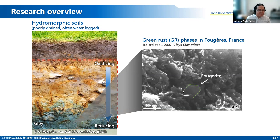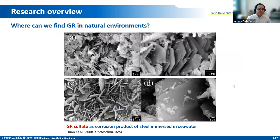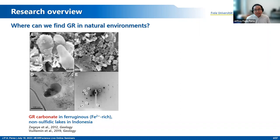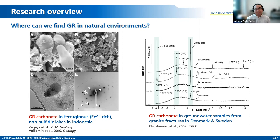We can see green rust from the scanning electron micrograph as this hexagonal plate-like particle. In addition to hydromorphic soils, we can also find green rust in other natural environments, such as corrosion products for steel immersed in seawater. It has also been identified in iron(II)-rich non-sulfidic lakes, and in anoxic or oxygen-poor groundwater and aquifers.